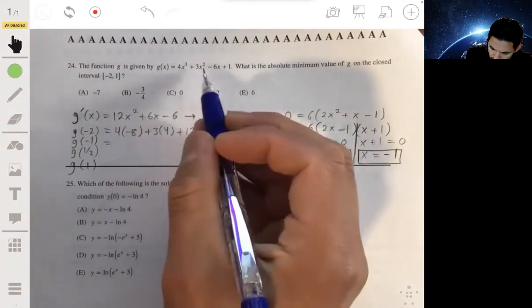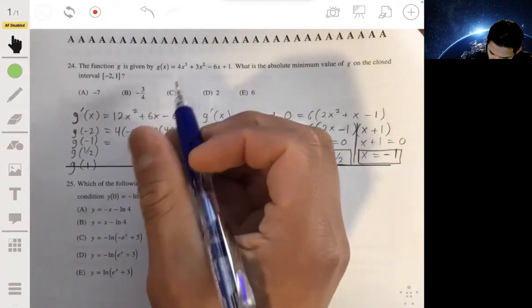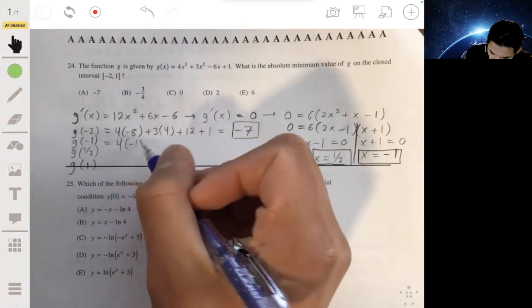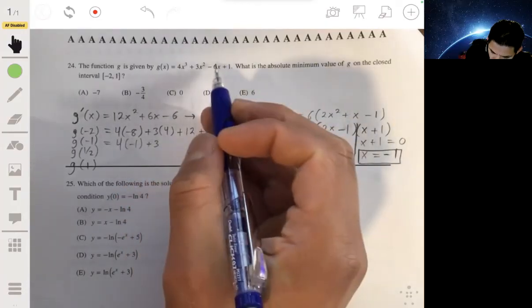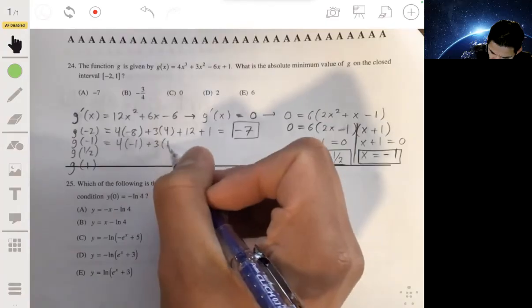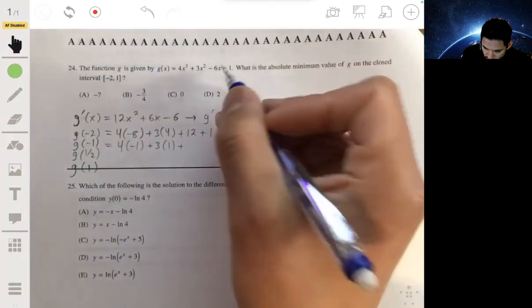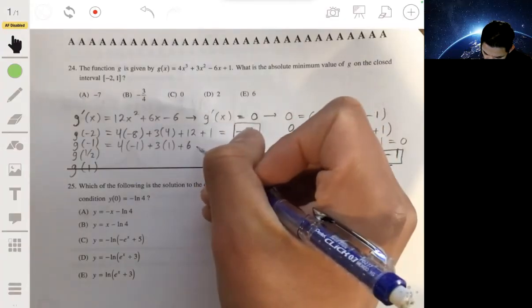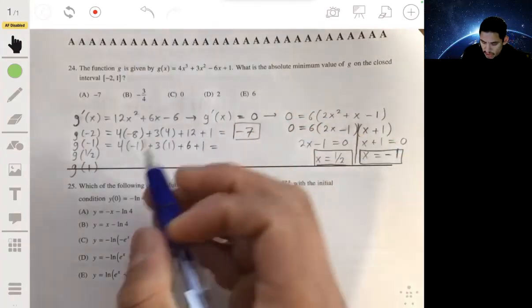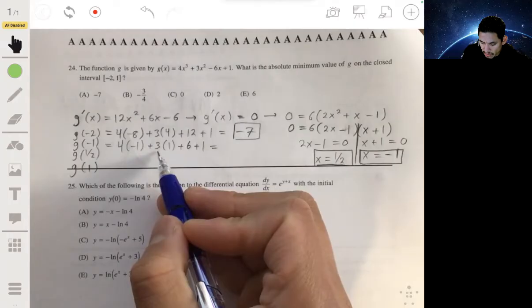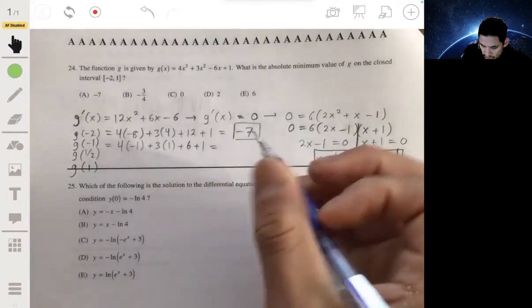g of negative 1: that'll be four times negative 1 plus three times 1 plus 6 plus 1, so negative 4 plus 3 is negative 1, plus 6 gives me 6.